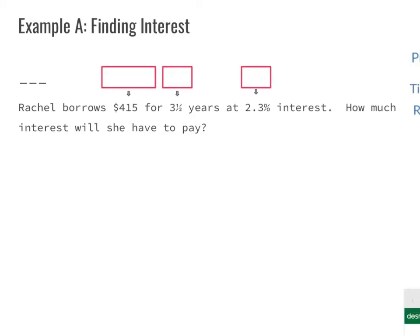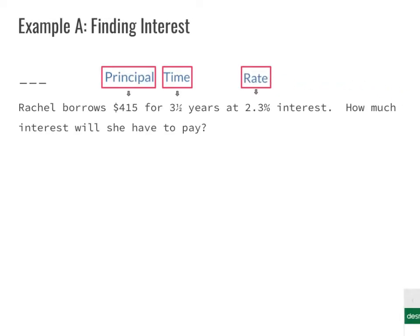Rachel borrows $415, so that's the amount of money she starts with — that's our principal. For three and a half years, that's time. At 2.3% interest — even though it says the word interest, it's talking about the rate at which we're borrowing — so that's our R. Now we need to take a look at our formula.